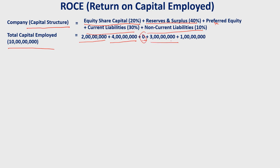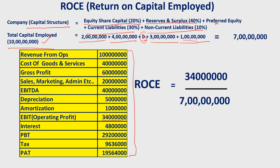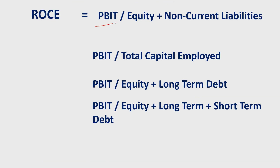Let's say the company has a capital structure: equity is 3 crores, non-current liability is 1 crore at 10% interest, giving total capital employed of 7 crores — with total equity of 6 crores and non-current liabilities of 1 crore. From the company's P&L statement, if the operating profit is 3 crores 40 lakhs, then ROCE = 3.40 crores divided by 7 crores = 48.57%.